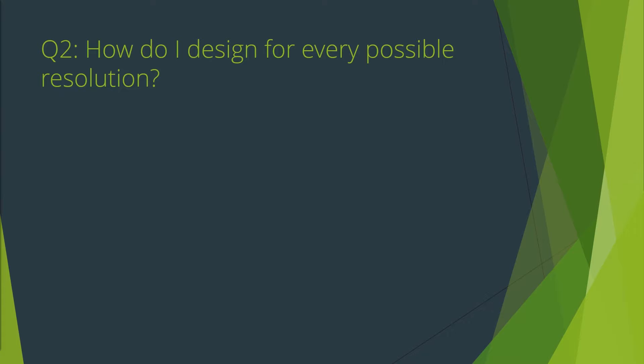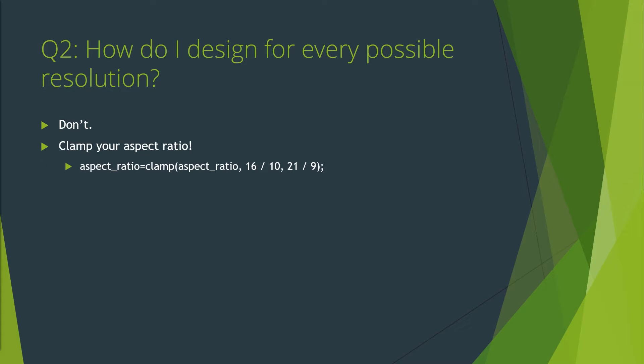How do you design for every possible resolution and aspect ratio? You don't. Between ultra-wide, ancient 4x3 monitors, and portrait displays, there are far too many combinations for your game to support every single one. It's okay to say you're not going to support 4x3 monitors — widescreen or bust. Your game can still play on a 4x3 monitor or even a portrait-oriented display, just with black bars. To do this, you only need to clamp the aspect ratio. In the manager, after you calculate the display aspect ratio, put something like this: aspect_ratio = clamp(aspect_ratio, 16/10, 21/9). This will make sure the aspect ratio of your game will never be more square than 16 by 10, or more wide than 21 by 9.